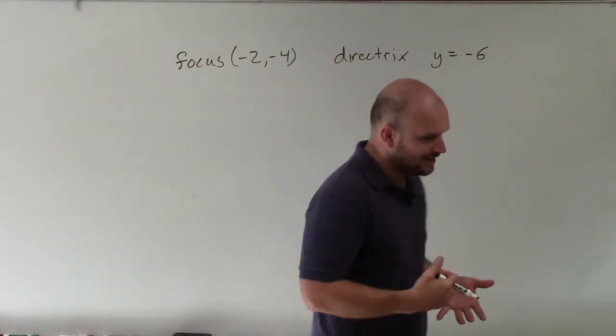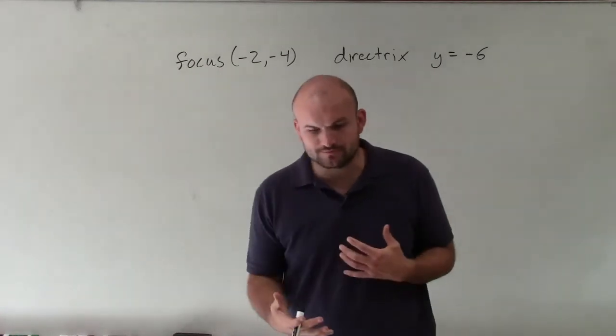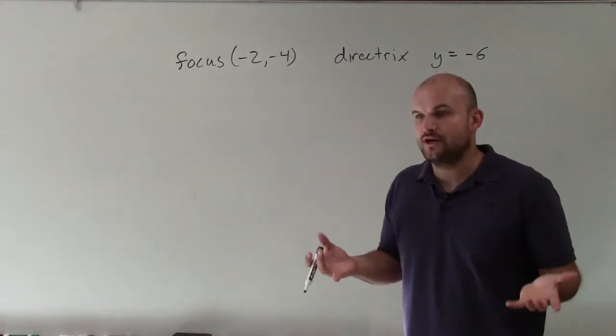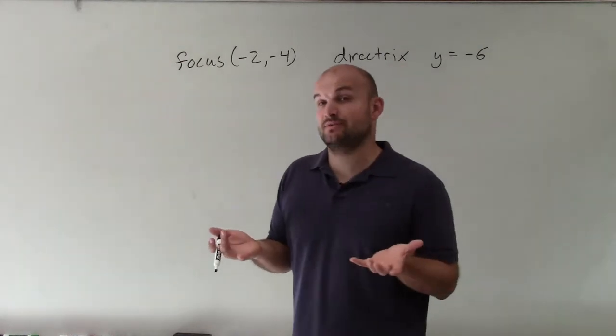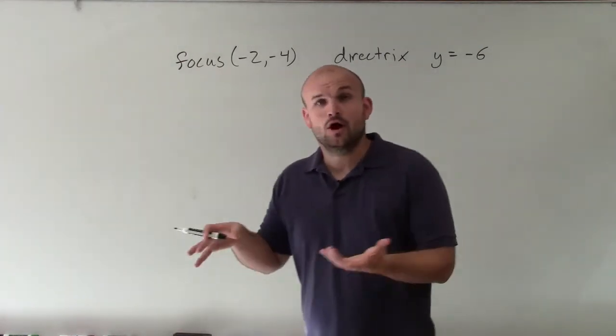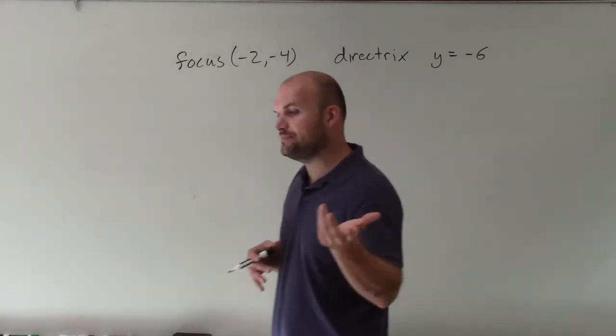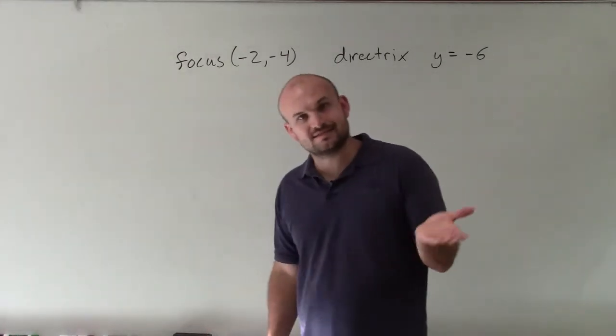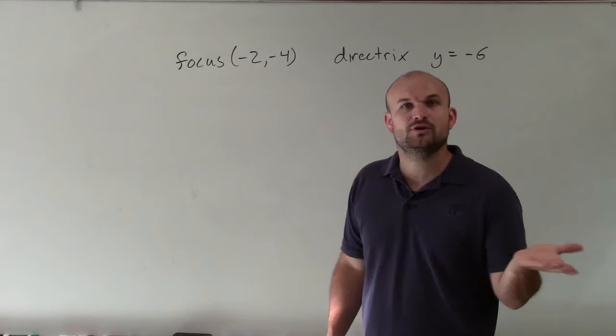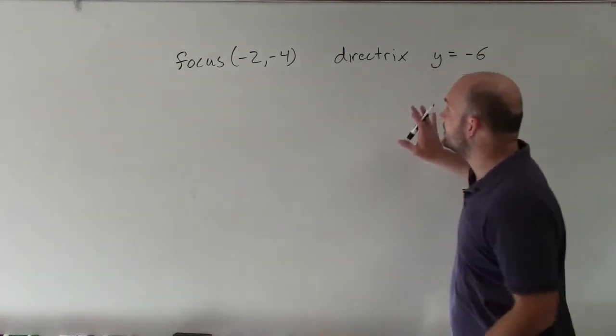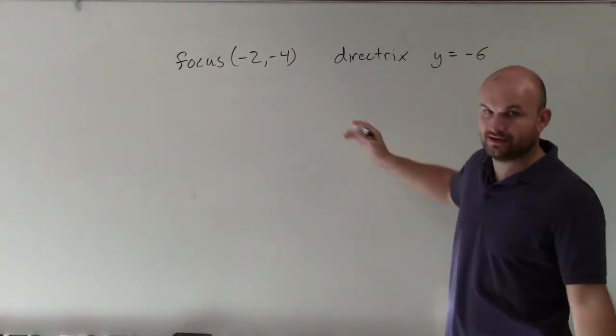Now, when we're trying to identify the equation, what we need to do is understand first what type of equation to write. Do we type an equation where the parabola opens up or down, or the parabola's going to open left or right? So to do that, we want to be able to identify where is the axis of symmetry. Is this a vertical axis of symmetry or horizontal? And the only way to really identify that is to plot the information that we have.